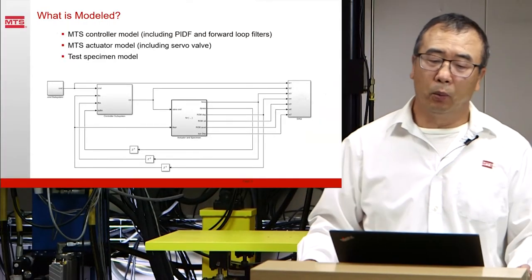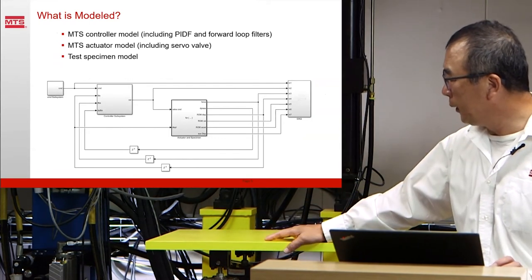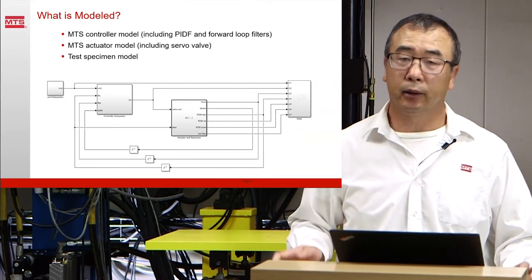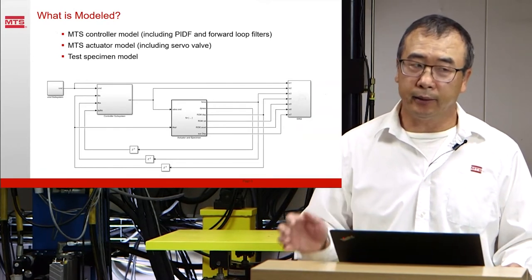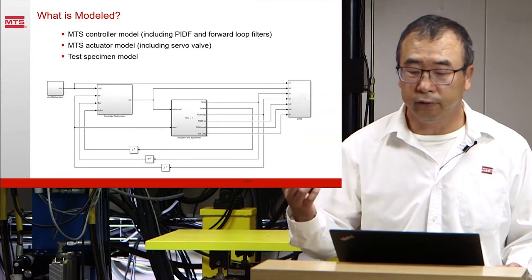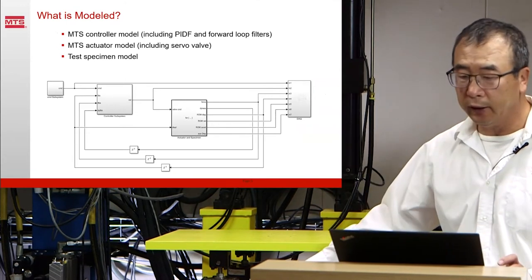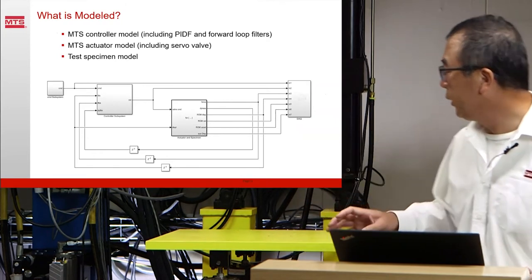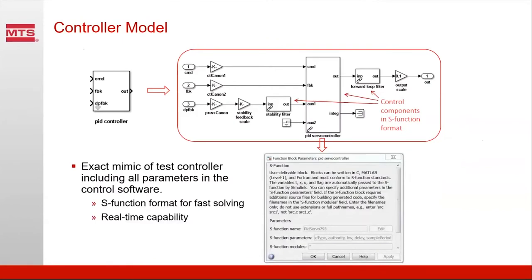So what needs to be modeled? All the main components in the test system need to be modeled. The controller definitely needs to be modeled, and that will include all the parameters in the controller, such as PIDF parameters and forward loop filters. The model should also include the actuators, servo valves, and definitely the specimen. Now let's talk about each piece. First, the controller.